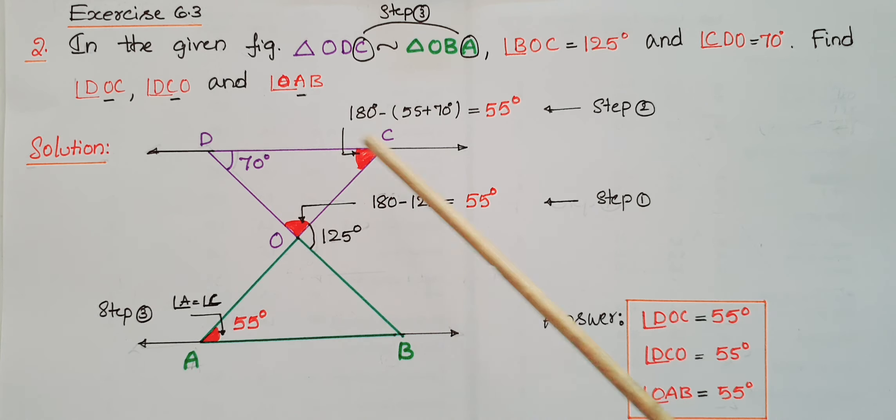So you can directly write this angle as 55 degrees because angle C is 55, so angle A is equal to 55. The answers are: angle DOC is 55 degrees, angle DCO is 55 degrees, and angle OAB is also 55 degrees.